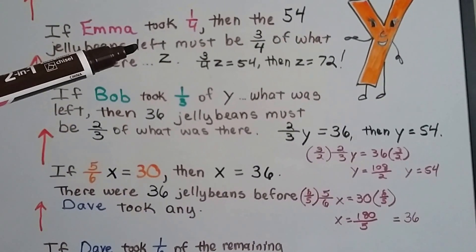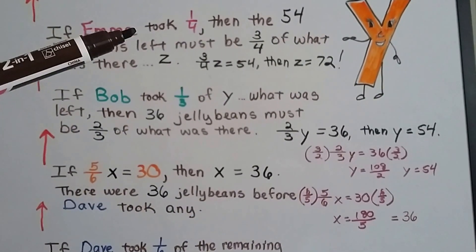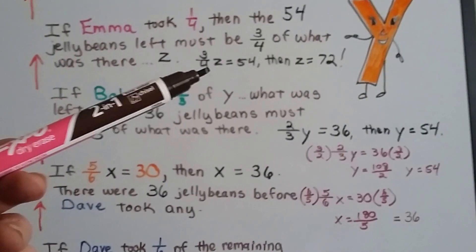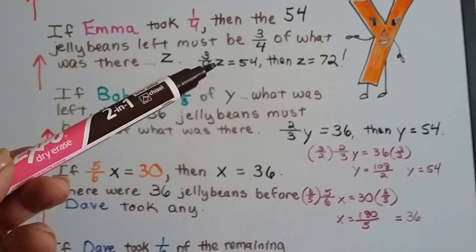Emma took one-fourth. And after Emma took her one-fourth, that left the fifty-four. So the amount before Emma took any is Z.